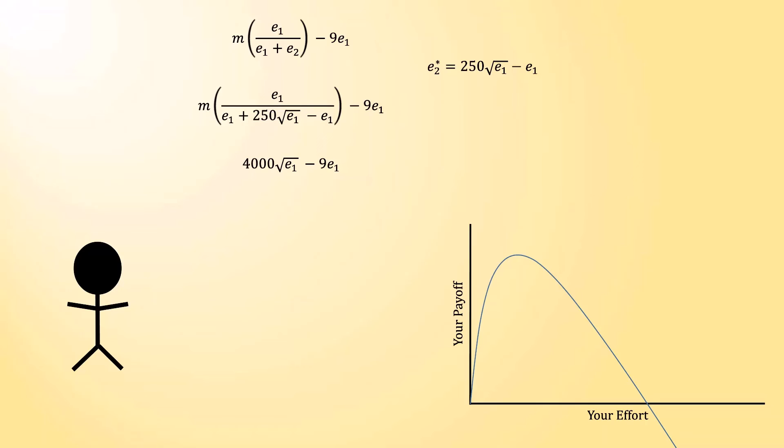Like before, you want to choose the effort level associated with the maximum of the function. And if you draw a tangent line at where the maximum of the function is, you see that it is flat. Thus, we just need to take another derivative, this time with respect to your effort level, and set it equal to zero. When we do that, and we solve for your effort level, we get 4 million divided by 81. That works out to being about 49,383.